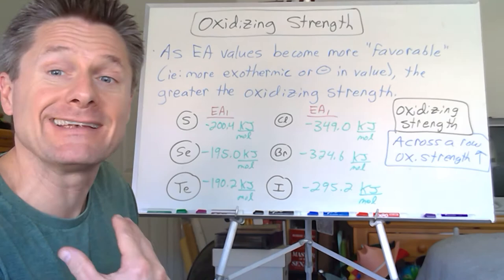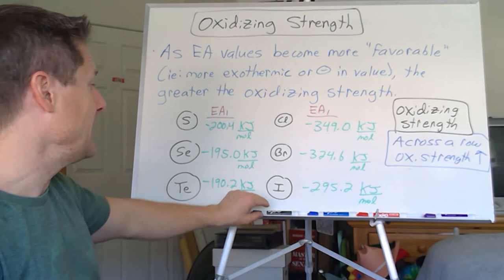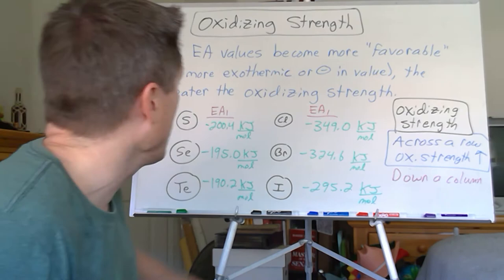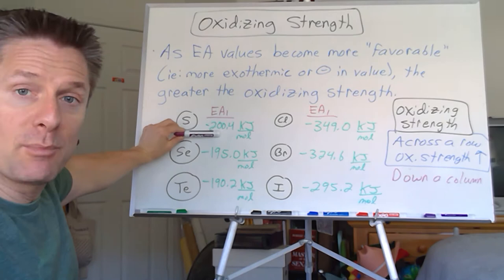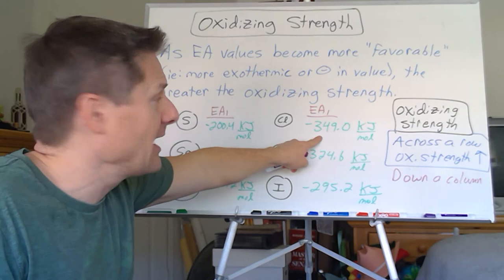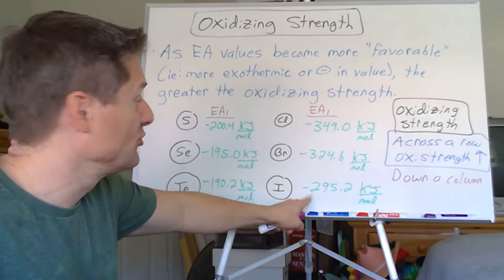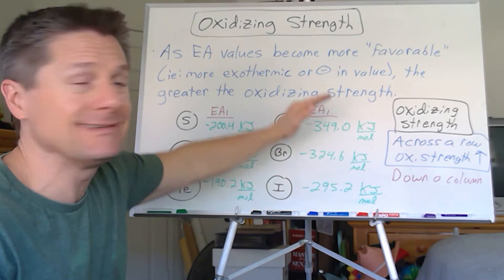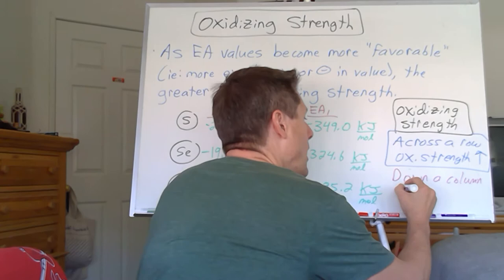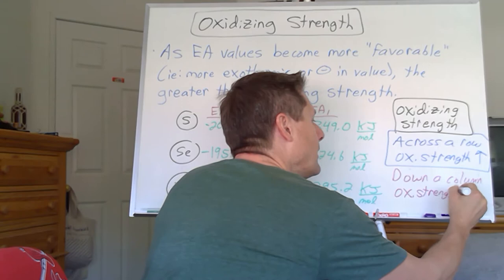Now let's look at going down a column. Sulfur in the chalcogens: negative 200.4, negative 195.0, negative 190.2 — more exothermic and more favorable higher up. For the halogens: chlorine negative 349.0, bromine negative 324.6, iodine negative 295.2 kJ/mol — again, more exothermic and more favorable at the top. So as you go down a column, the electron affinity gets less favorable, meaning oxidizing strength decreases going down a column.